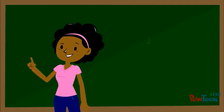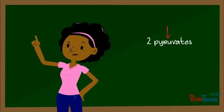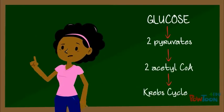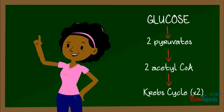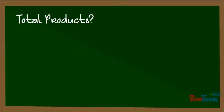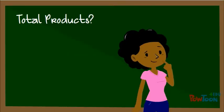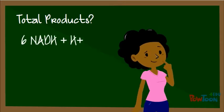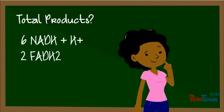Since there are 2 pyruvates produced by every 1 glucose molecule, the Krebs cycle happens 2 times for each glucose molecule. 2 cycles of the Krebs cycle will give us a grand total of 6 NADH plus H pluses, 2 FADH2s, and 2 ATPs.